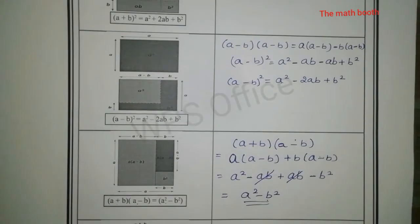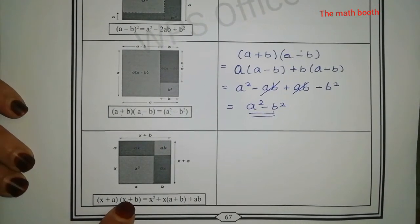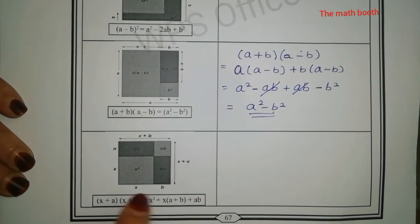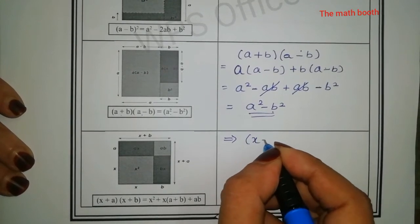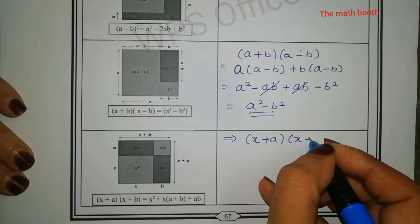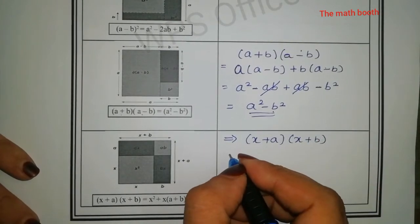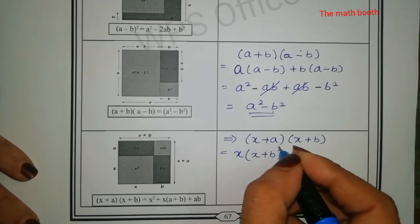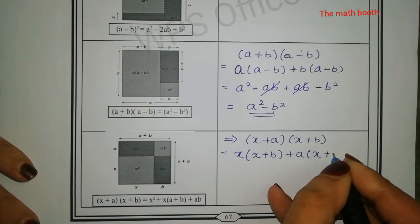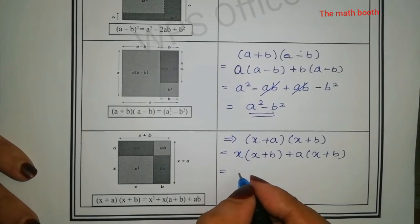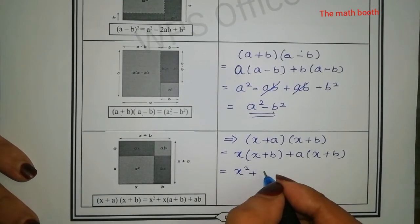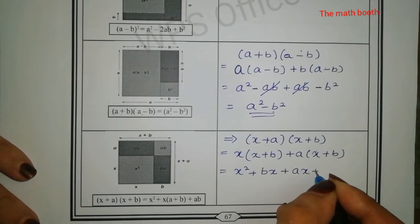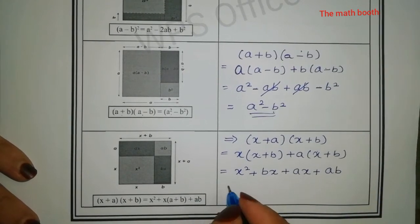Let us see the next one. (x + a)(x + b) equals x² + (a + b)x + ab — this formula we have to derive. So I'll write (x + a)(x + b): one bracket I'll keep as it is, one I'll split — x as it is, so second bracket as it is: a into (x + b). So x into x gives x², x into b gives bx, a into x gives ax, and a into b gives ab.